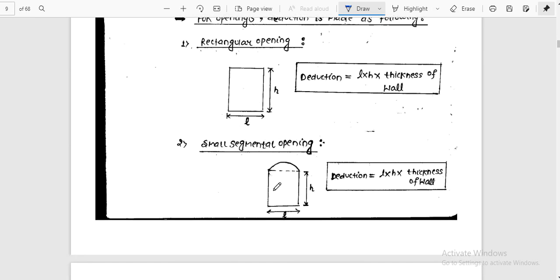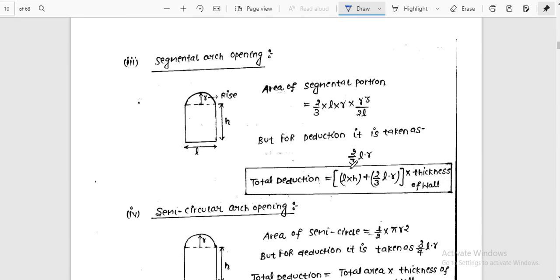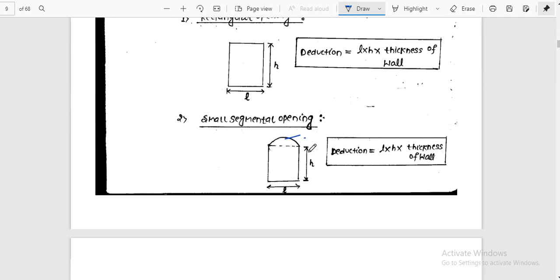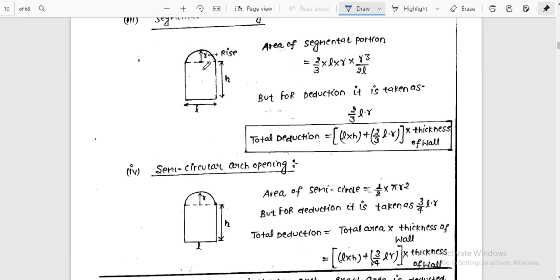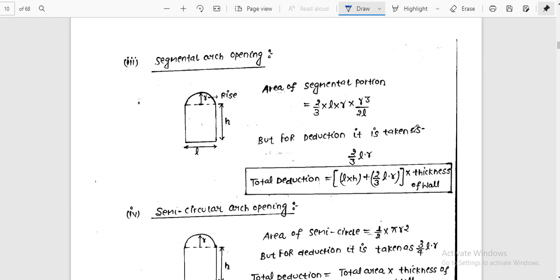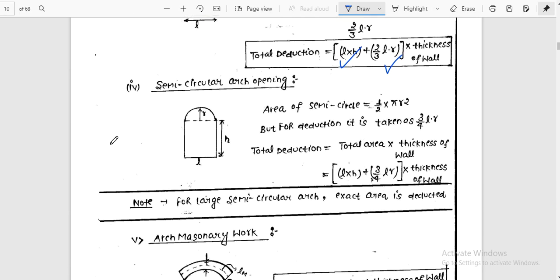For small segmental openings involving complexity, the segmental arc opening has a specific formula. The formula is two-thirds L into R, which is R³/2, but for deduction it's taken as two-thirds LR. The deduction is the rectangular portion plus two-thirds of L into R, multiplied by thickness of the wall.